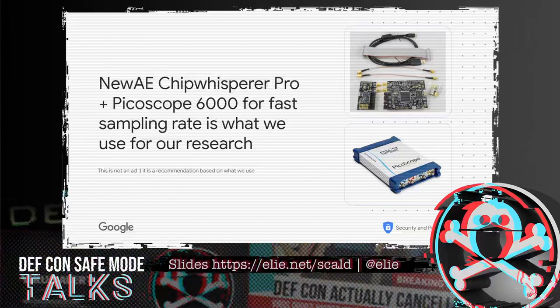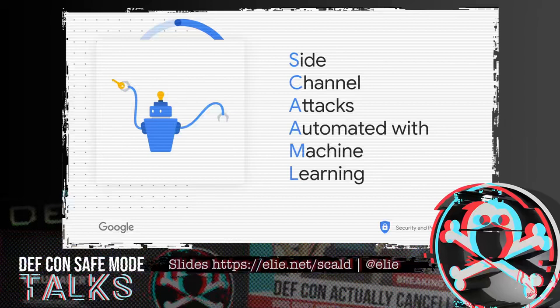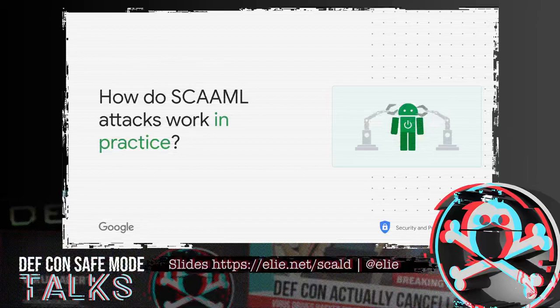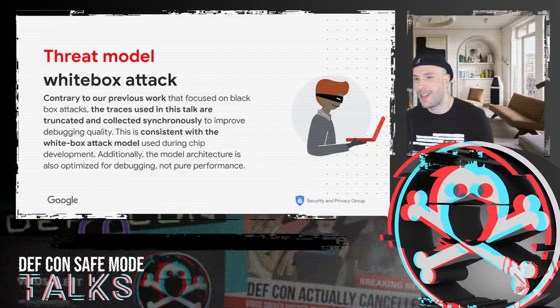Now that we have an idea of what side-channel attacks are, let's talk about how you would go about using AI to perform such an attack. This is what we call side-channel attack automated with machine learning, also known as SCAMON. This is what we presented in depth last year. Let me briefly recap how they work in practice, because we're going to need the model created using a SCAMON attack to do the explainability and find out what the leakage is. More details are available at eli.net/SCAMON.